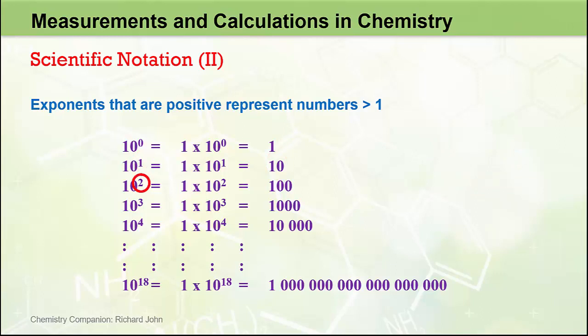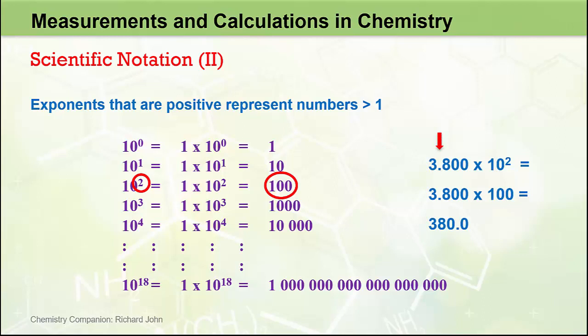10 to the power of 2, or 10 squared, is equal to 10 times 10, or 100. So 3.800 times 10 to the 2 actually represents 3.800 times 100, which equals 380. In this case, the position of the decimal place in the coefficient has moved two spaces to the right in the decimal form of the number, corresponding to the exponent of plus 2. The positive value of the exponent tells us to move the decimal place to the right, and the magnitude of 2 tells us how many places to move it.